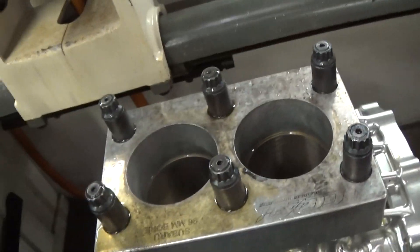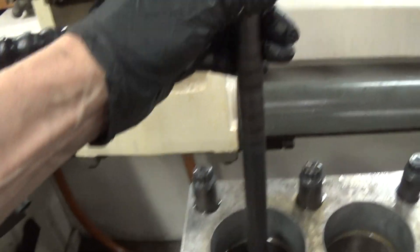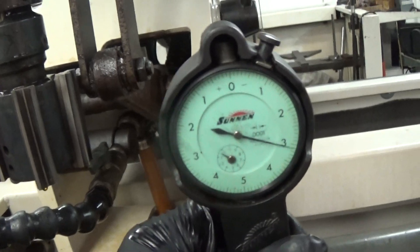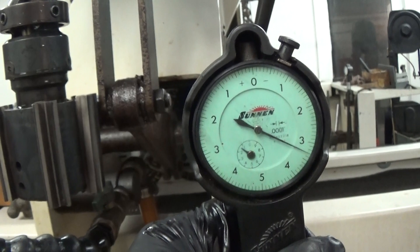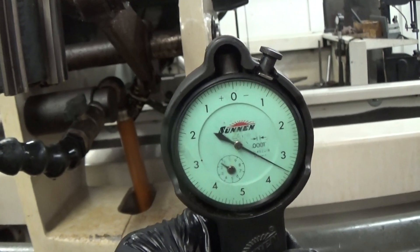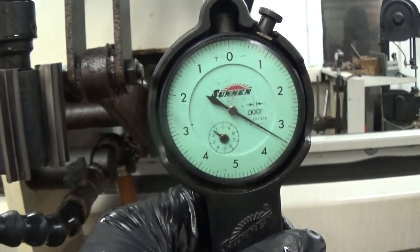This cylinder next to it I've rough honed just to try to get rid of the taper. As you can see, we're now about 0.0035 inches at the top and 0.0035 inches on the bottom. That's what this hone can do.